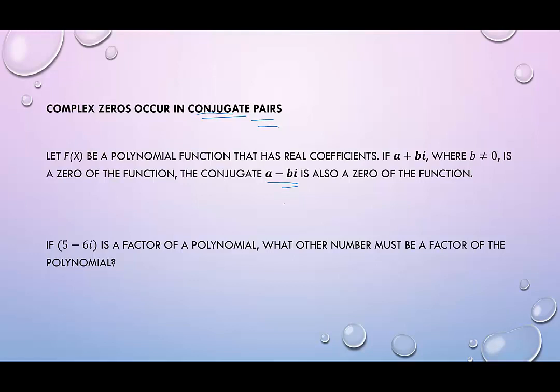So based on this information, if 5 - 6i is a factor of a polynomial, what other number must be a factor of that polynomial? It must be 5 + 6i, right? The conjugate pair of 5 - 6i is 5 + 6i.